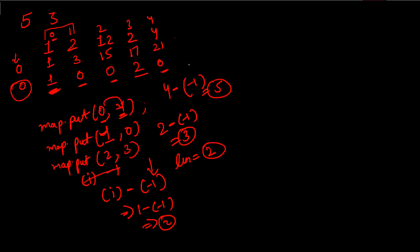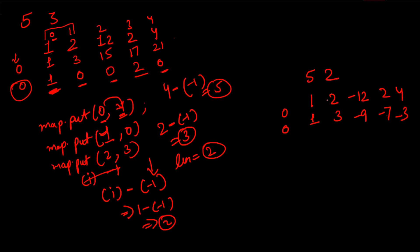Now, what if remainders are negative? Let's take array [1, 2, -12, 2, 4], K = 2. The prefix sums are 1, 3, -9, -7, -3, and the remainders when dividing by 2 are 1, 1, -1, -1, -1. Some remainders are negative here.